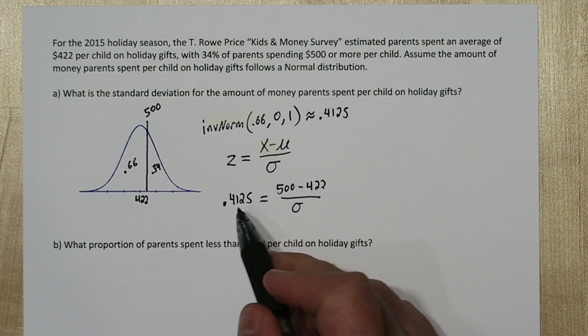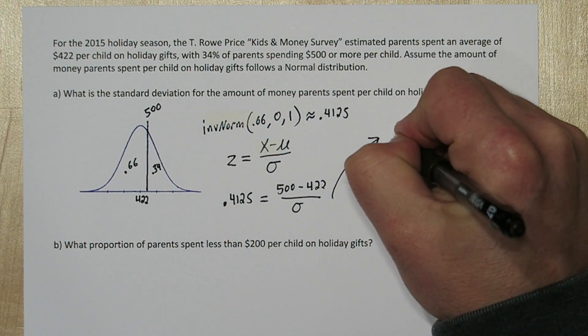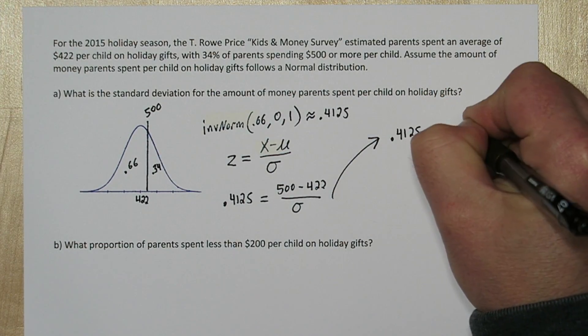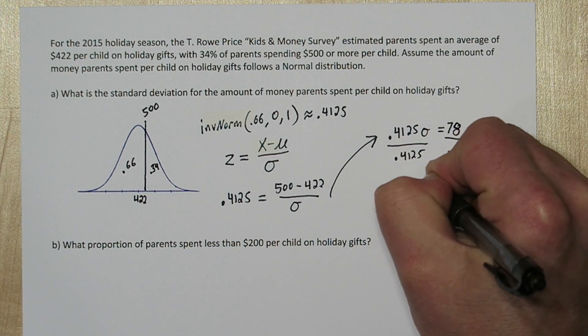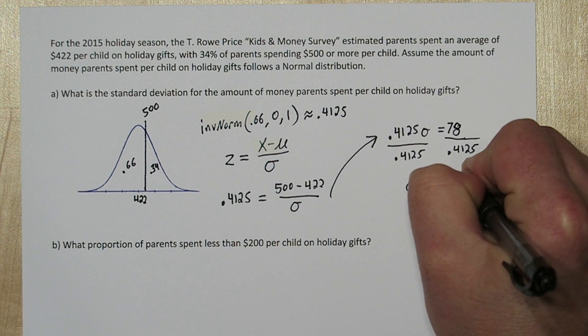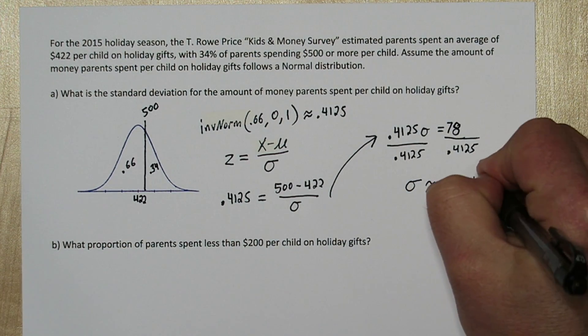So if we multiply both sides by sigma, we get 0.4125 sigma equals 78. Now divide both sides by 0.4125. And we get sigma is approximately equal to $189.11.